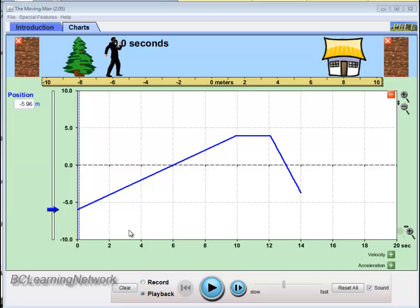So what I've done is I've already set up the motion of the man and created this graph that we see in front of us, this position versus time graph. And we're going to discuss the graph and see if we can predict what his motion was when I made the graph originally.